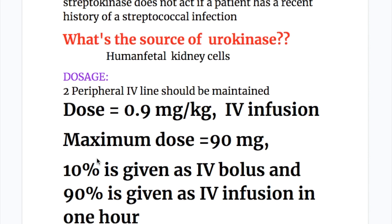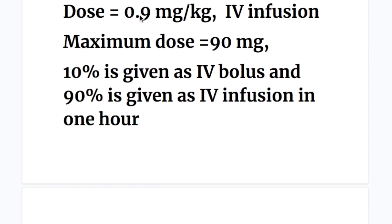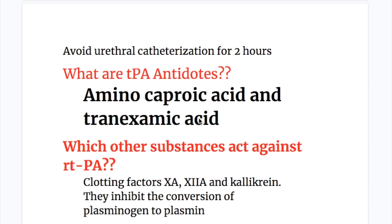Regarding dosage of recombinant tissue plasminogen activators: two peripheral IV lines should be maintained. The dose is 0.9 mg per kg given by IV infusion, with a maximum dose of 90 mg. Ten percent is given as IV bolus and the remaining 90% is given as IV infusion over one hour. Avoid urethral catheterization for two hours when these drugs are used.